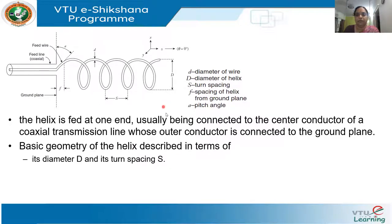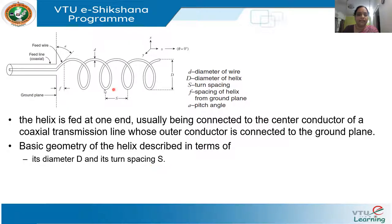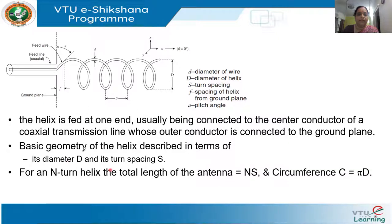When you define the geometry of this helix, it is defined in terms of its diameter D and turn spacing S. When you have an N-turn helix, there is a spacing S between each turn. For an N-turn helix, the total length of this antenna will be N × S. When you view from one end, the size is defined by the circumference C, where C = πD.